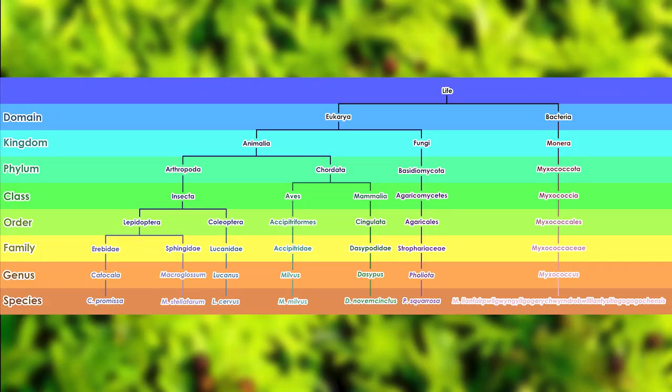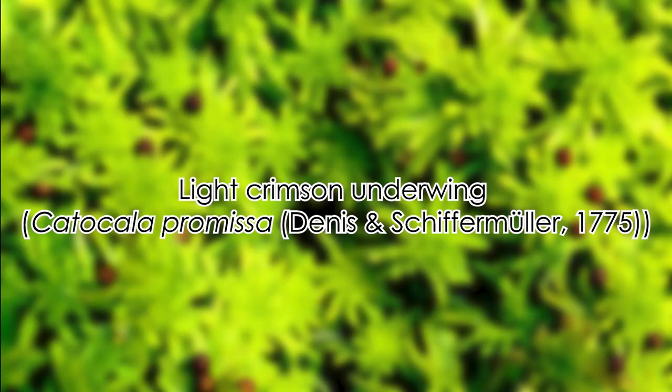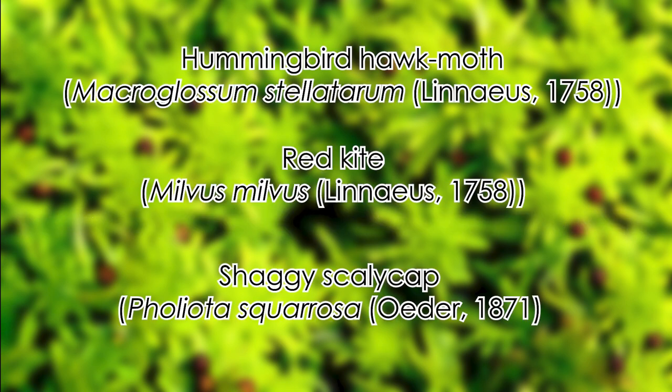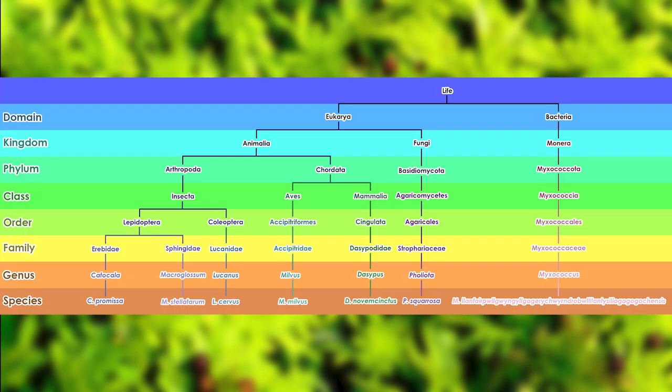By giving these examples you can see each of the different things I talked about previously in action. With the two moths you can see how they are in the same order but different families and therefore different genera. The light crimson underwing shows the authority with two names and how the placement of the species within genera has changed because of the brackets. The hawkmoth, red kite, and shaggy scalycap also show the change in placement but with only one authority name. The armadillo shows no change in genus placement, and so does the bacteria but also with multiple authorities giving rise to et al. Also, with these examples — and by thinking of this diagram as almost a family tree, which scientists would call a phylogenetic tree — you can see the relatedness of each of the species to each other. The light crimson underwing, hummingbird hawkmoth, and stag beetle are fairly related because they are all in the same class Insecta. However the two moths are more related to each other than to the stag beetle because they share the order Lepidoptera, while the stag beetle is in Coleoptera. And you can see how the light crimson underwing is incredibly distantly related to the bacteria because they are not even in the same domain.